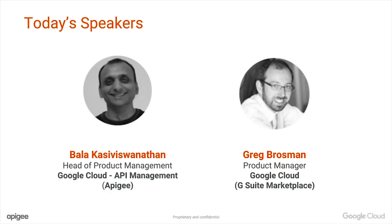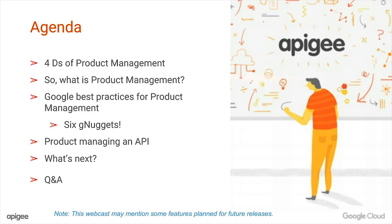Bala is super passionate about helping enterprises become digital faster with APIs. He's all about powering an API-first world. I would also like to invite Greg Rossman, product manager, Google Cloud G Suite marketplace. Greg is all about the art of product management. Prior to Google, he was with Silver Spring Networks, where he was responsible for the launch of their big data platform for utilities, the IoT Cloud Platform and applications. So welcome to both our speakers. Without further ado, I would like to call upon Bala to kick off the presentation.